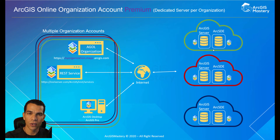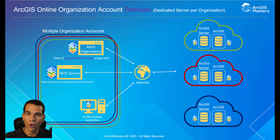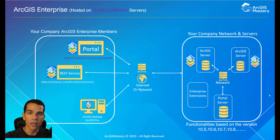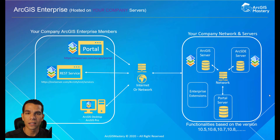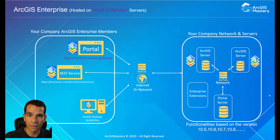All of these — public account, organization standard, and organization premium — are hosted on Esri's cloud service, meaning Esri manages the security, the servers, and the data. This brings us to the next need for some organizations: ArcGIS Enterprise. Basically, ArcGIS Enterprise means buying the entire infrastructure — ArcGIS Server and ArcGIS Portal — in a package, and hosting it on your own servers, giving you full control over security and privacy. This is critical for organizations like military or sensitive agencies.